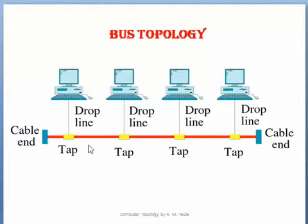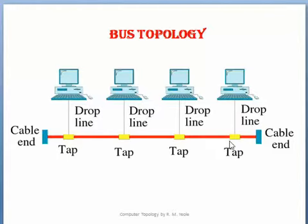The computers connected to the starting position require minimum time for data transmission, while the computers connected to the extreme end require much more time. One important drawback of bus topology is that if the main cable fails, then the entire network will collapse.